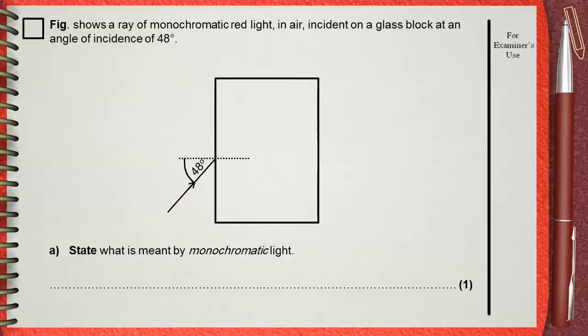Figure shows a ray of monochromatic red light in air, incident on a glass block at an angle of incidence of 48 degrees. Part A: State what is meant by monochromatic light.